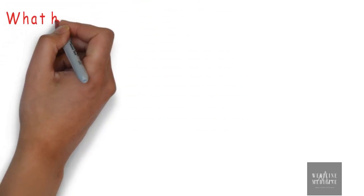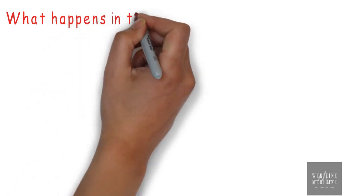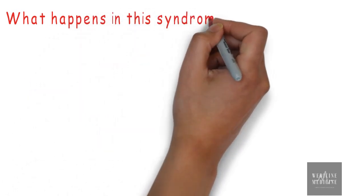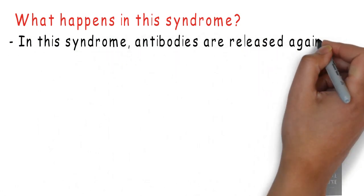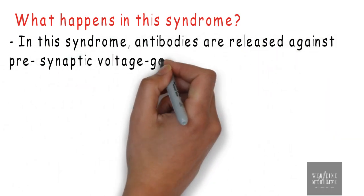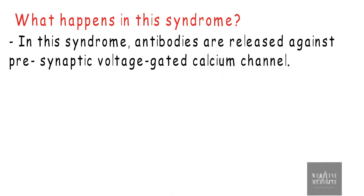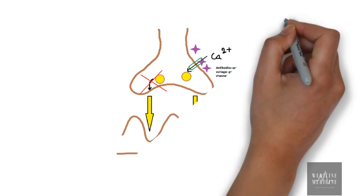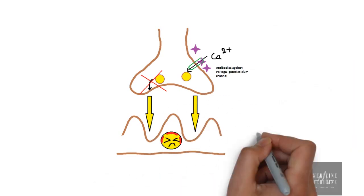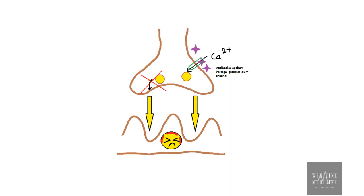So, what exactly happens in this syndrome, causing defective neuromuscular transmission? In this syndrome, antibodies are released against presynaptic voltage-gated calcium channel. These antibodies are auto-antibodies attacking voltage-gated calcium channel, inhibiting calcium influx into presynaptic neuron, preventing acetylcholine release, as a result of which no signal is passed to neuromuscular junction.